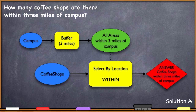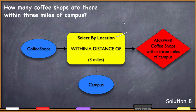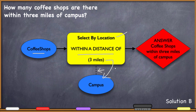Now I want to look at another way to solve this question, because there are very frequently multiple ways to solve GIS problems. This second solution is even simpler in terms of operations — just one step. We use select by location: coffee shops is the input, campus is the auxiliary information shown by a dotted line, and the parameter is 'within a distance of three miles of campus.' Execute that and it returns your answer: coffee shops within three miles of campus.